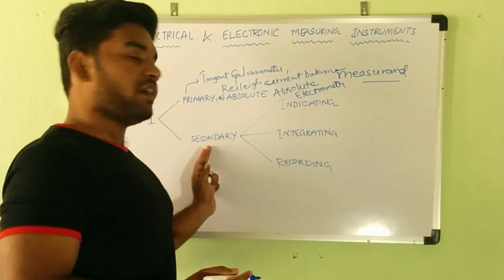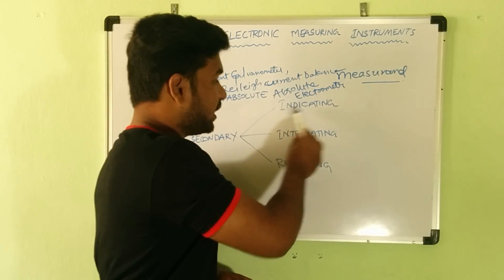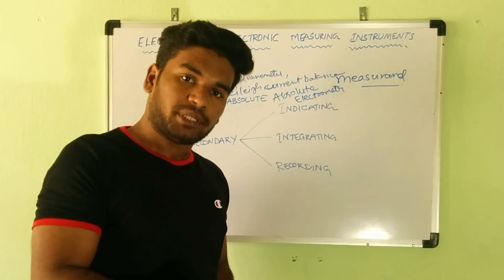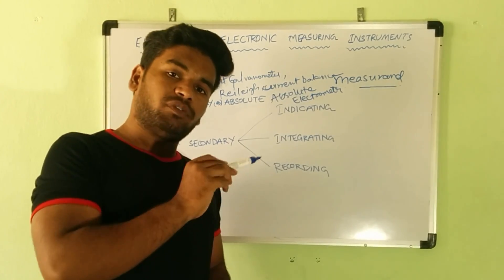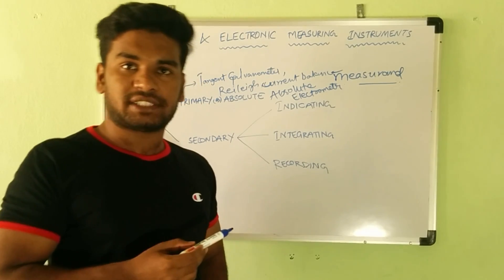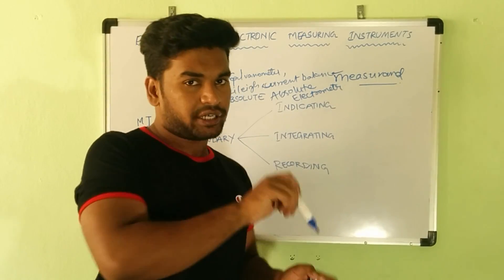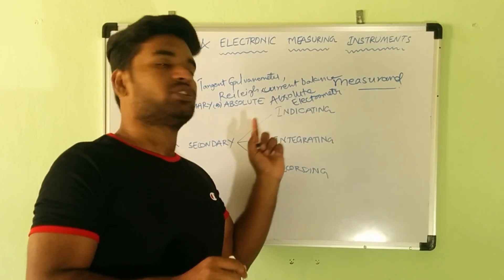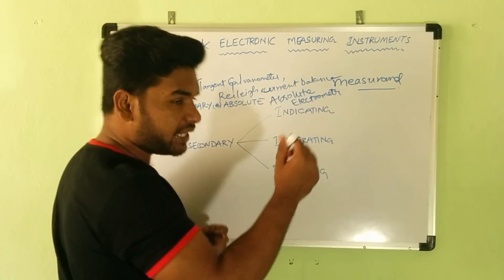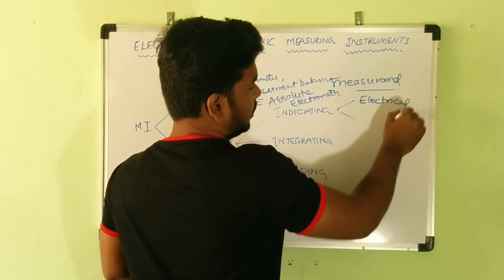Secondary instruments are again classified into three categories: indicating, integrating, and recording. Indicating instruments indicate the measurement or the quantity being measured as a continuous function of time — they give the instantaneous value of the quantity under measurement. For example, an ammeter: if the current right now is two amperes, it shows two amperes; as the current changes, it indicates accordingly. Indicating instruments are further classified into two types based on working principle: electrical and electronic.